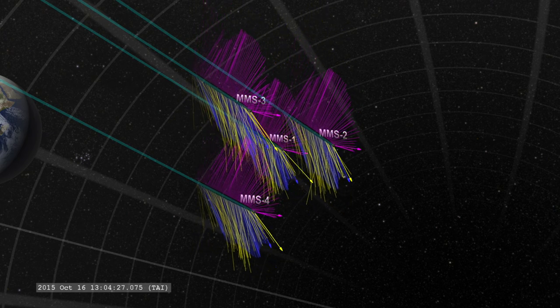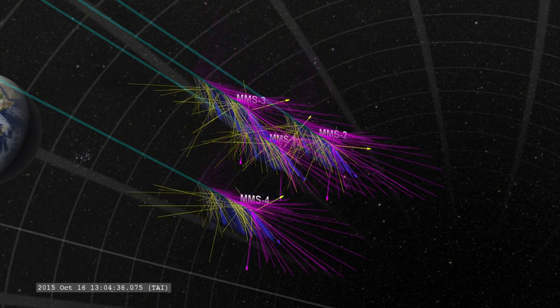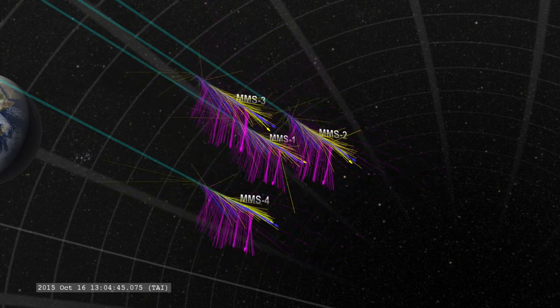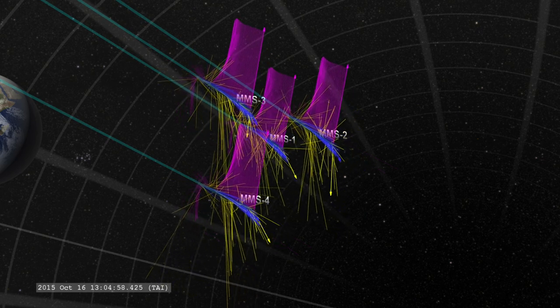Watch how they go along steadily, and then suddenly begin to go in every direction. This is the point where the magnetic fields reconfigured and particles were sent racing off at high speed.